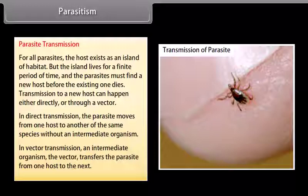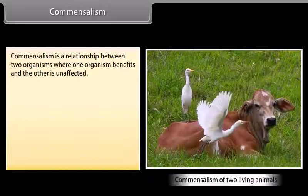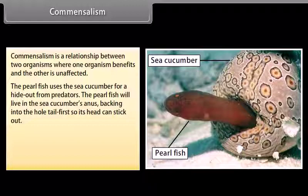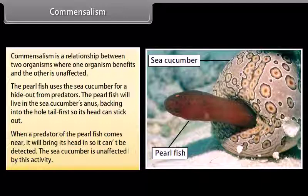Commensalism is a relationship between two organisms where one organism benefits and the other is unaffected. For example, the pearlfish uses the sea cucumber as a hideout from predators. The pearlfish lives in the sea cucumber's anus, backing in tail first so its head can stick out. When a predator comes near, it brings its head in so it cannot be detected. The sea cucumber is unaffected by this activity.